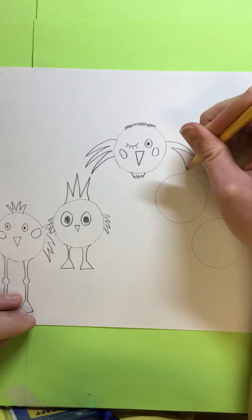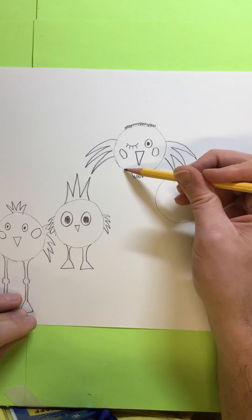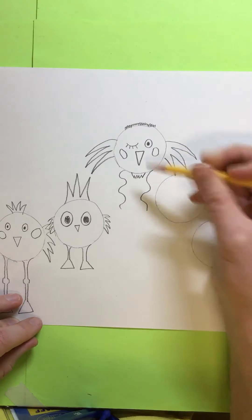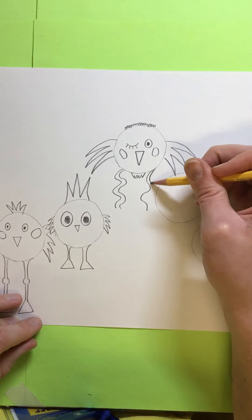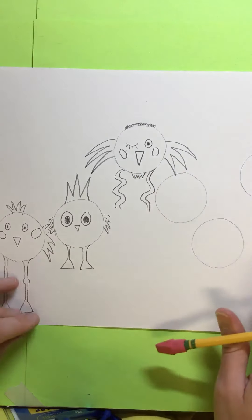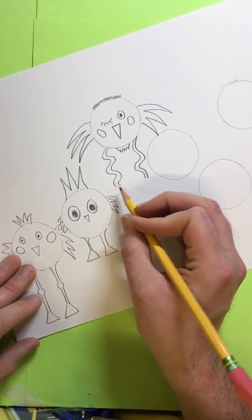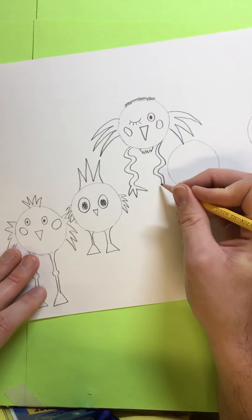Remember, see how you can make all of your birds look different. And this one, let's give this one some wiggly legs. Wiggly legs, wiggly legs. I like that. And we'll give it some three-toed claws.